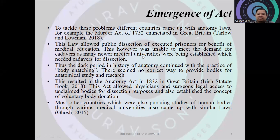This led to a dark period in the history of anatomy where the practice of body snatching began, as there was no correct legal way to provide bodies for anatomical purposes. Ultimately, in 1832, an Anatomy Act was passed in Britain which allowed physicians and surgeons legal access to unclaimed bodies for dissection, and also established the concept of voluntary body donation. This introduced the anatomy act into the legal world, which was subsequently followed by other countries, including India.